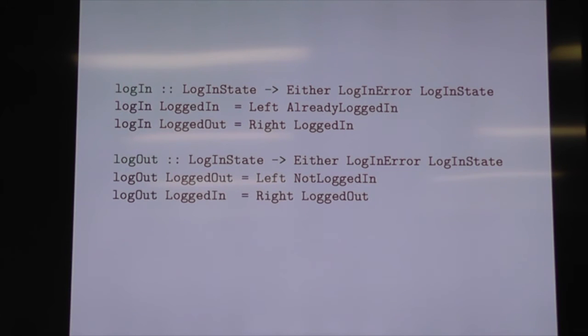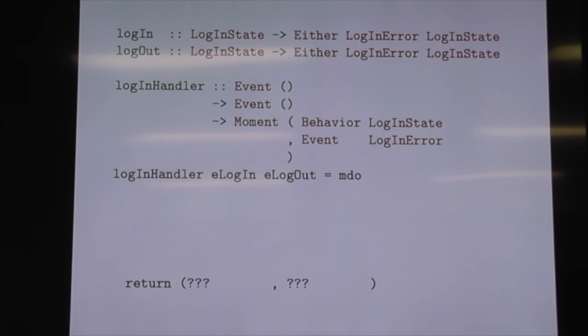Now we add error handling so you can't log in if you're already logged in, and you can't log out if you're already logged out. It will give us an error on the left side of Either, or tell us the new state on the right side. Then we add recursive do — which is why you're going to need pizza in a minute. We have our two functions. We want a behaviour giving us our logged-in state and an event if there's an error. We use mdo rather than do because recursive do is in play. We use stepper starting in the logged-out state, changing on some event — if we put in the right event there, it'll give us the logged-in state.